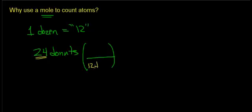So for example, twelve donuts equals one dozen donuts. And I can cancel out this unit donuts. And when I do that, I get twenty-four divided by twelve, which is two, two dozen.